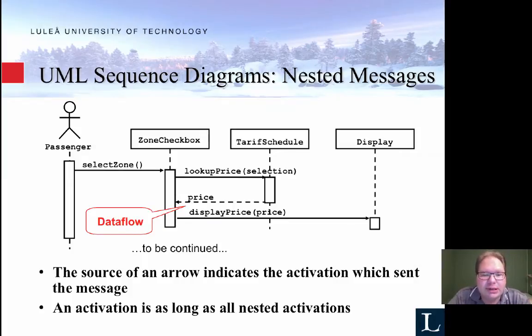Looking at more of a nested message, on the same example, we can select the zone, in the zone checkbox, that one in turn looks up the price, and here you can see that we use selection as a parameter for this call, and the tariff schedule. As a return, you can see the data flow and the dashed line, and that's the price, and then you display this to the passenger on the display price.